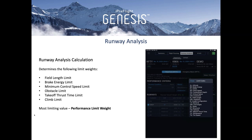Once the performance data is collected and the airport and obstacle data is stored, we're able to calculate the runway analysis. The runway analysis calculation determines the following limit weights: field length limit, brake energy limit, minimum control speed limit, obstacle limit, takeoff thrust time limit, and climb weight. Each of these is calculated for a given runway, and the most restrictive becomes your performance limit weight. There are additional limiting parameters listed for the operator in our app, as seen in the PreFlight Genesis image to the right.